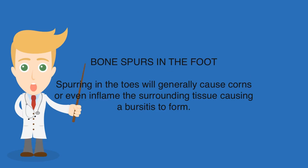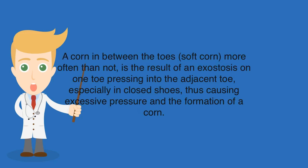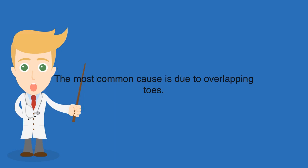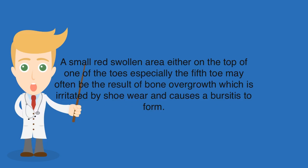Bone spurs in the foot. Spurring in the toes will generally cause corns or even inflame the surrounding tissue, causing a bursitis to form. A corn in between the toes — a soft corn — more often than not is the result of an exostosis on one toe pressing into the adjacent toe, especially in closed shoes, causing excessive pressure and the formation of a corn. The most common cause is due to overlapping toes. A small red swollen area on the top of one of the toes, especially the fifth toe, may often be the result of bone overgrowth, which is irritated by shoe wear and causes a bursitis to form.